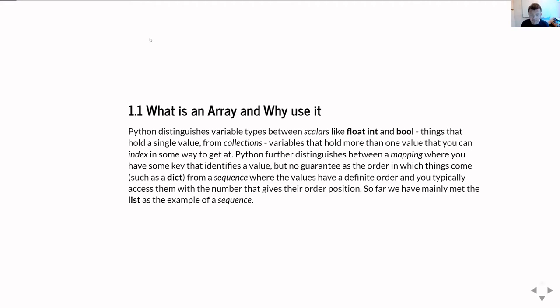And in Python we distinguish these collections into two subtypes, so there's things which are called mappings, which basically means that you have some kind of key that lets you identify which value you're interested in, but then you don't have any control of what order those are being stored in, so you can't say that key one comes before key two.